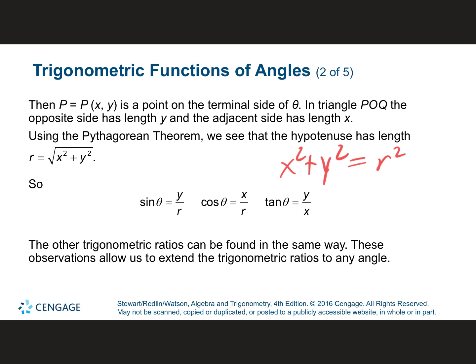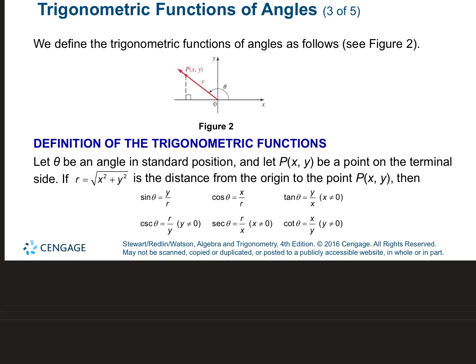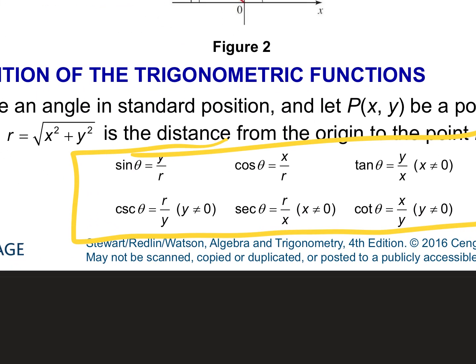Instead of saying opposite over hypotenuse, we say Y over R. Instead of adjacent over hypotenuse, it's X over R. And instead of opposite over adjacent, it's leg over leg. You should take a picture of this and put it next to every problem we do. We're going to identify what X, Y, and R are, then find sine, cosine, and tangent, then the reciprocal functions.